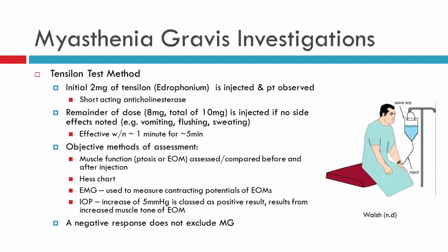If the patient responds to the anticholinesterase, you will see an improvement in muscle function. You can look at the ocular movements or observe the ptosis, depending on what's present initially. You can perform a HES chart before and after Tensilon to compare the ocular movements more objectively. You could do an EMG and look at the action potentials of the extraocular muscles. You can even assess IOP — when a patient responds to Tensilon, there is increased muscle tone of the extraocular muscles, leading to a significant increase in IOP of about 5mmHg.